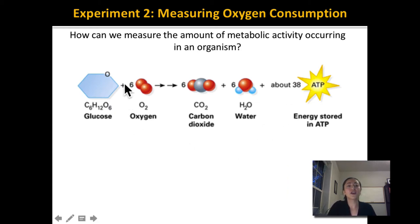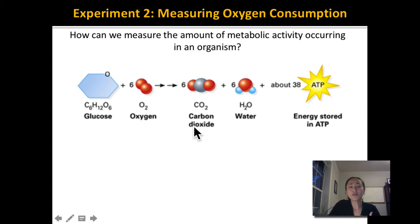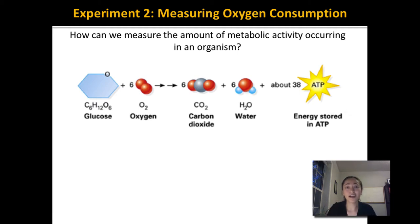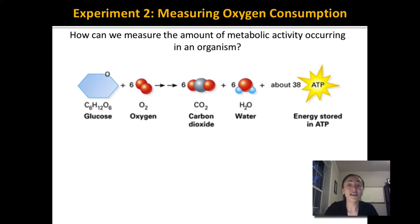In cellular respiration, we ingest glucose, and then in the presence of oxygen, we break glucose down. What results from that is carbon dioxide and water. We also produce a usable form of chemical energy that our cells can use directly — that is called ATP. The whole reason this process happens is to create ATP, the energy our cells need to stay alive. Not only do animals undergo cellular respiration, but fungi, mushrooms, and plants do this as well. Plants must break down the glucose they make and convert it into ATP so they can actually grow and function.